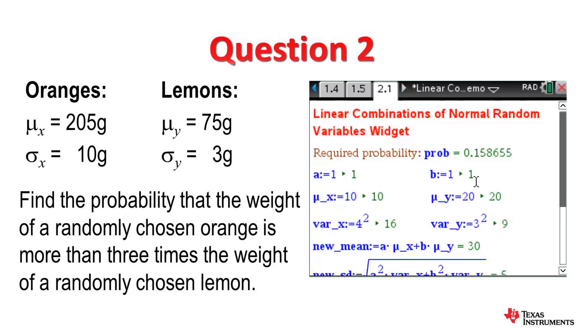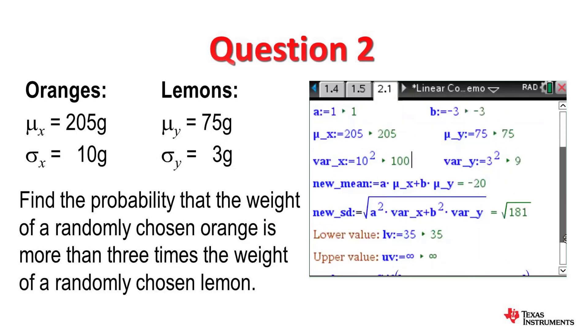And what we do now is we just fill in the fields. So what we have is we have A equals 1, we click in here for B and we change 1 to negative 3 and press enter, and notice that the probability is updated. It's currently not the correct answer. The mean weight of an orange was 205, press enter. Make sure inside every single math box you press enter each time. The mean of a randomly chosen lemon is 75, press enter. The variance for the oranges, 10 squared, press enter, and the variance for the lemons, 3 squared, so that stays the same.